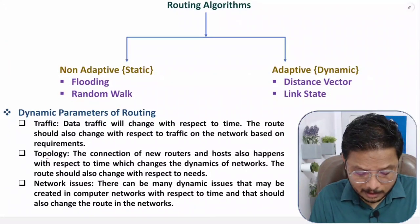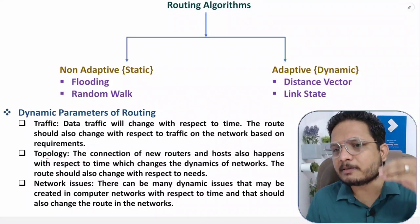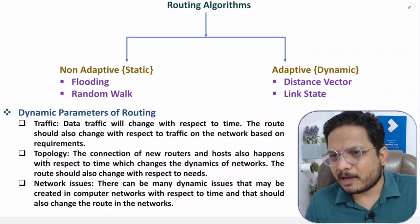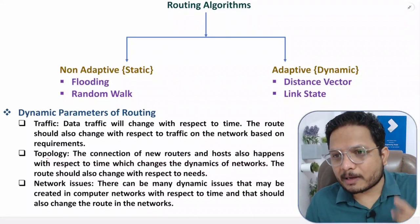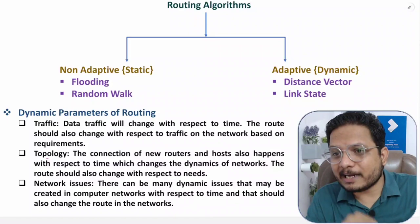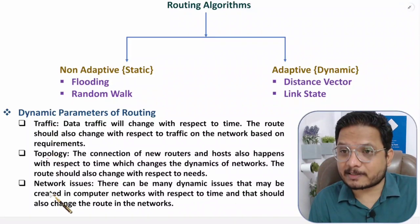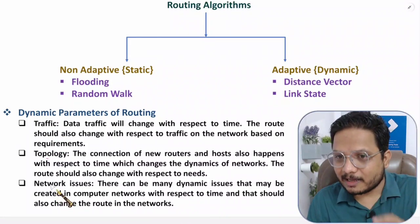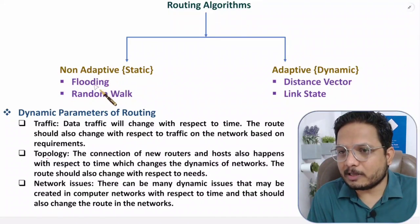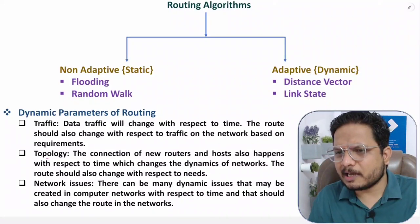A third dynamic parameter is network issues. These can include earthquakes causing router failures, link breakdowns, damaged servers, malfunctioning routers, or degraded optical fiber speeds. Based on these dynamic parameters, routing should adapt, which is possible only in adaptive routing algorithms and not in non-adaptive ones. Upcoming videos will explain each algorithm in greater detail.